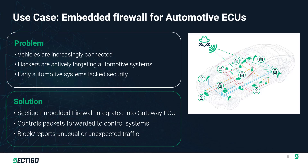One use case where this firewall is being used is in the automotive space. Vehicles are highly connected, and most are now building in a gateway ECU or communications ECU. Because vehicle communication is largely filtered through that specific ECU, it's become the focal point of attack. As hackers target it, more security is needed, so we've been working with a number of automotive manufacturers to build our firewall into gateway ECUs to block unexpected traffic, report anomalous behavior, and control what packets get forwarded to other systems within the vehicle.